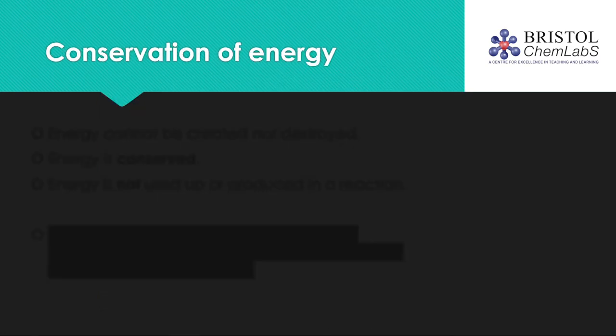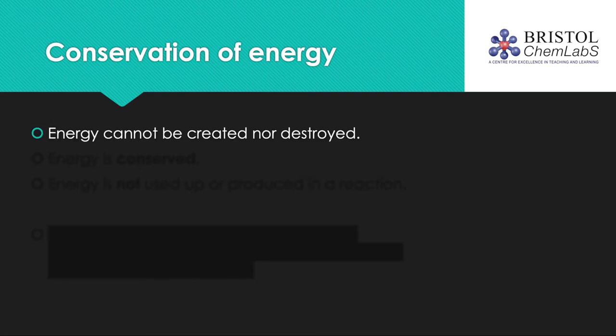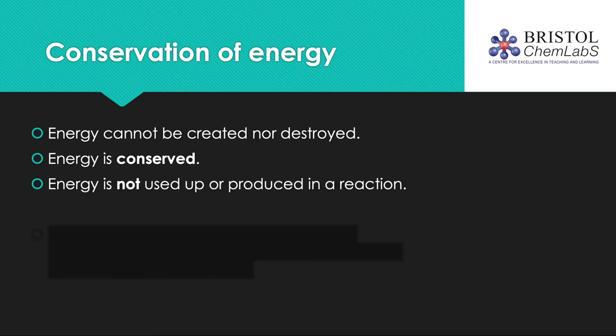Energy in chemical reactions is conserved. This means that the amount of energy in the universe is the same as it was before the reaction took place. If a reaction transfers energy to the surroundings, then the product molecules must have less energy than the reactants by the amount transferred. Energy is not used up or created in a reaction. You will often hear the phrases 'generate energy' or 'use up energy,' but this language is misleading — energy is only ever transferred from one form to another.